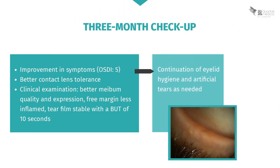You see her again for a check-up in a few months. Her symptoms have clearly improved, as her OSDI score is 5 and her contact lenses are more comfortable. Upon clinical examination, you note improved meibum expression and quality. The free margins are less inflamed and the tear film is more stable. You therefore advise her to continue with her eyelid hygiene and to use artificial tears as needed.